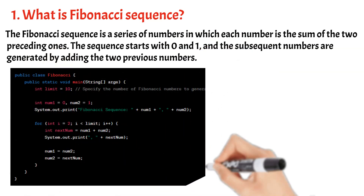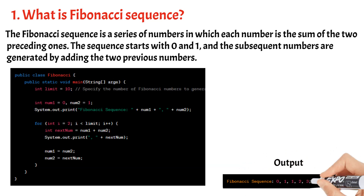In this example, we start with the initial Fibonacci numbers NUM1 and NUM2, which are 0 and 1, respectively. We print these initial numbers. Then, using a for loop, we generate the subsequent Fibonacci numbers by calculating the sum of the previous two numbers. The loop runs limit minus two times because we already have the first two numbers. We print each new Fibonacci number and update the values of NUM1 and NUM2 accordingly to prepare for the next iteration.